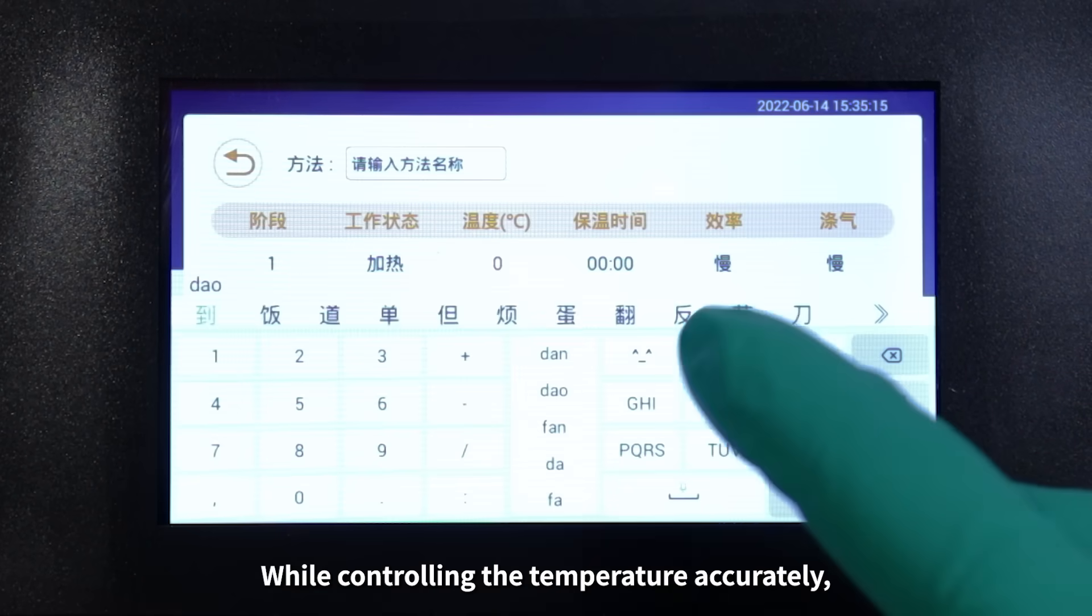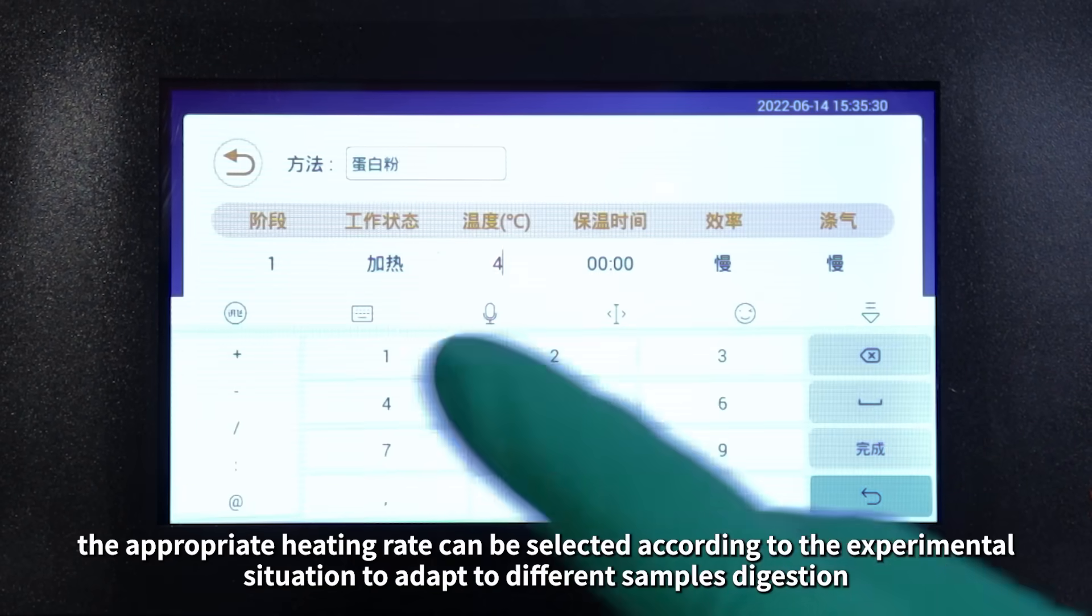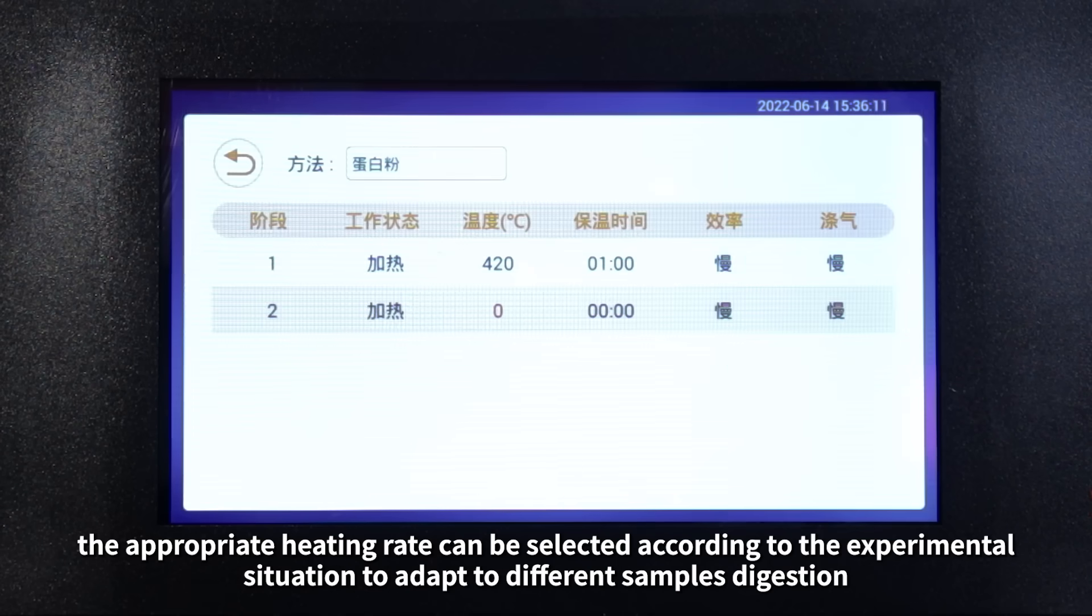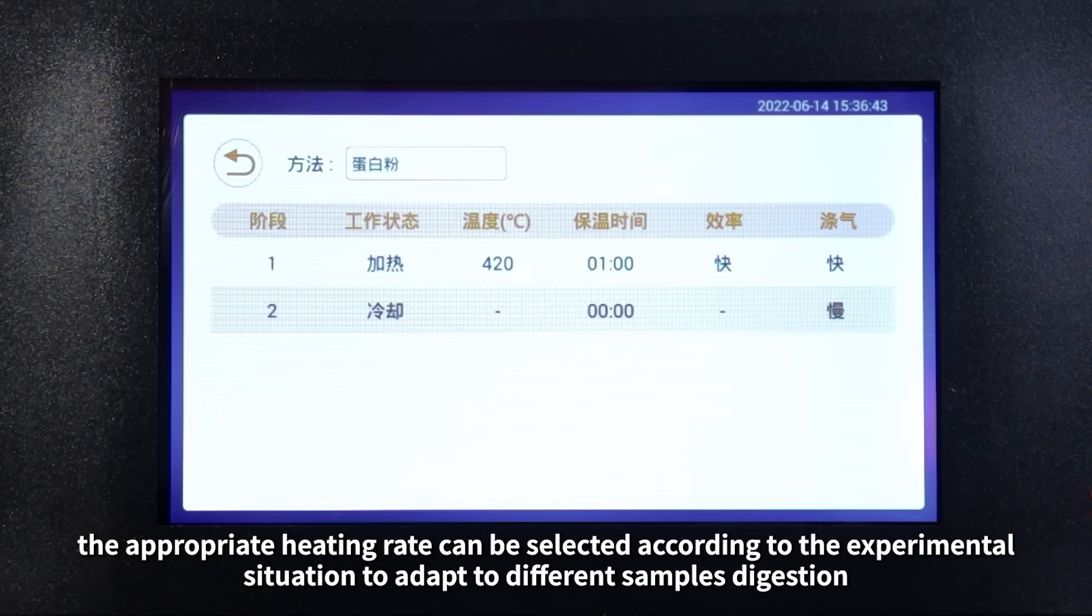Controllable heating rate allows accurate temperature control. The appropriate heating rate can be selected according to the experimental situation to adapt to different sample digestion requirements.